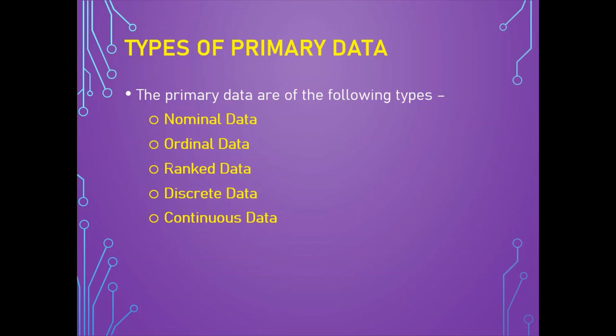Let us now discuss the different types of primary data in detail. Primary data can generally be classified into the following types: nominal data, ordinal data, ranked data, discrete data, and continuous data. We will discuss each one by one.